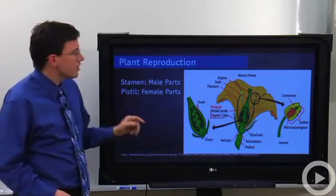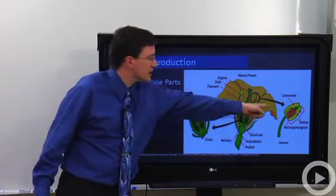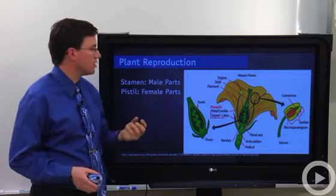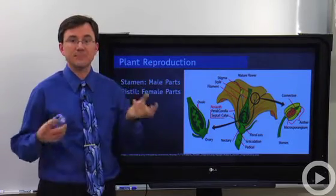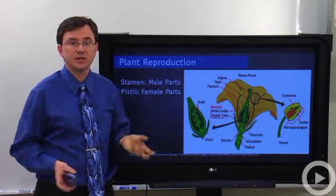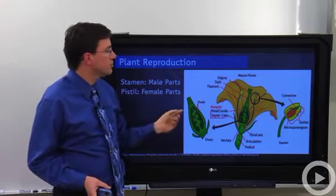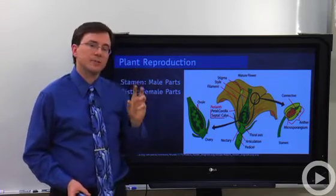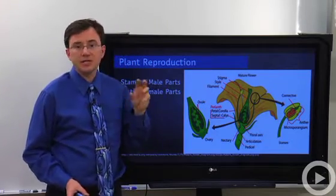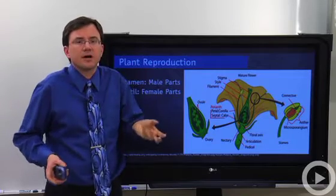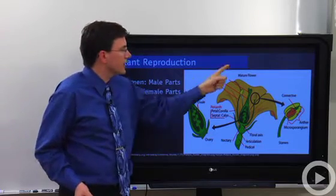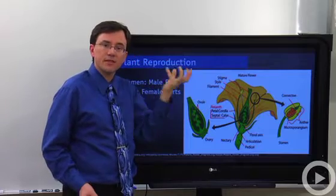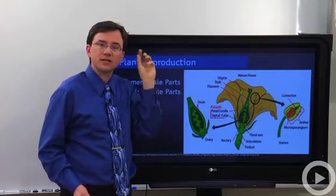The anther is the part of the flower that produces the pollen grains — those are essentially the male gametophytes of this flower. They get picked up by wind, picked up by a bee, or carried by some kind of animal, and they get carried to another flower where the pollen lands on the stigma, which is sticky so the pollen will attach to it.